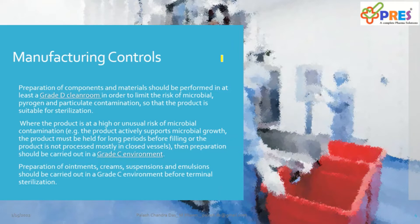Starting with manufacturing controls: preparation of the component and material should be performed at least in a Grade D environment, which is required to limit microbial control, pyrogens, or non-viable particle contaminations, so that the product can be sterilized using a suitable sterilization method.